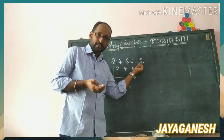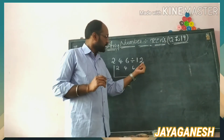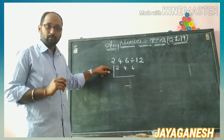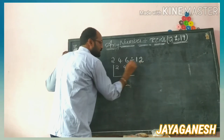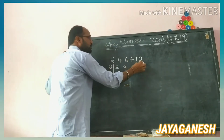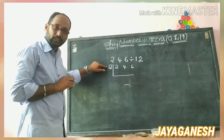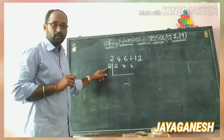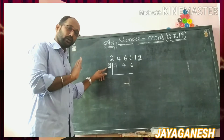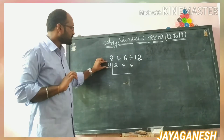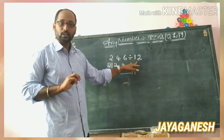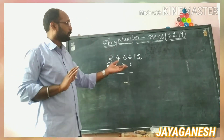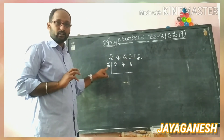Suppose you are dividing by 13, or 14 — whatever is there. In the units place of the divisor, you take that digit and write it in the divisor position. If 12 is there, write 2. If 13 is there, write 3. If 15 is there, write 5. If 19 is there, write 9. From 12 to 19, the process is the same — only the divisor digit changes.